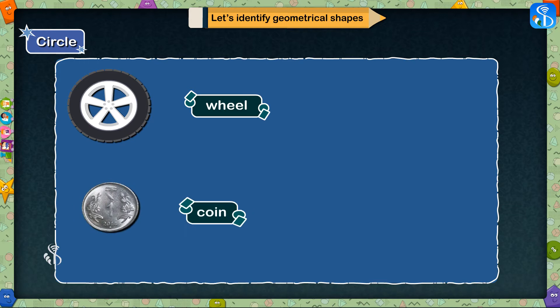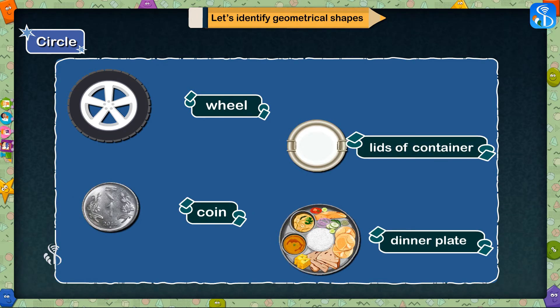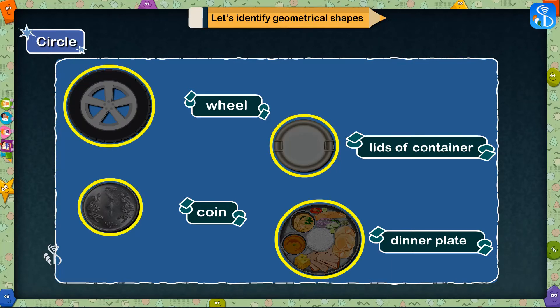You must have seen wheels, coins, lids of containers, and dinner plates. All these objects are circular in shape.